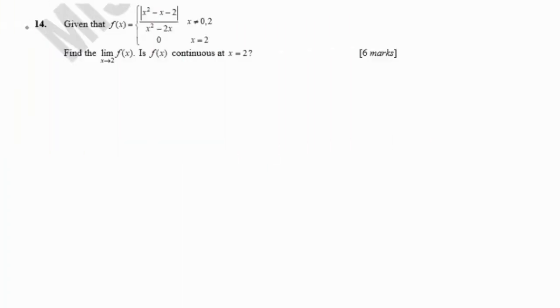Hi everyone, now we're going to discuss question 14. Given that the function equals modulus of x squared minus x minus 2, over x squared minus 2x. Looking at our function, we have a modulus function. So our first step, we need to define our modulus function as a piecewise function.